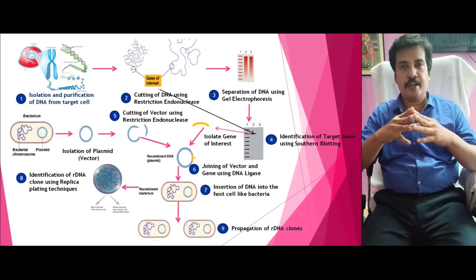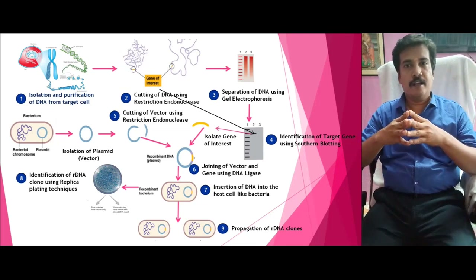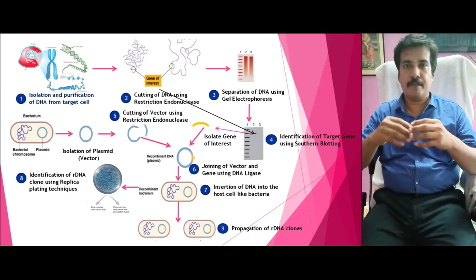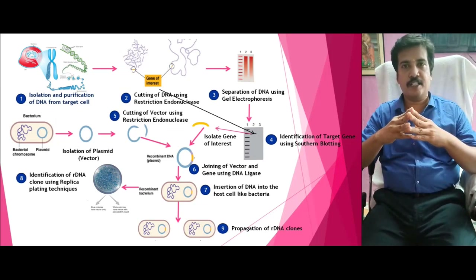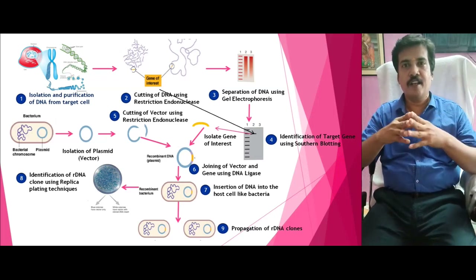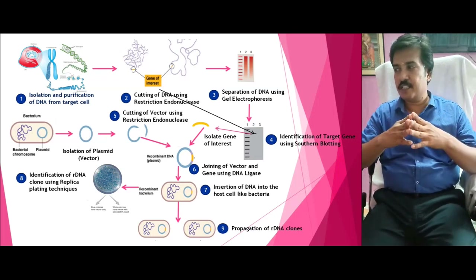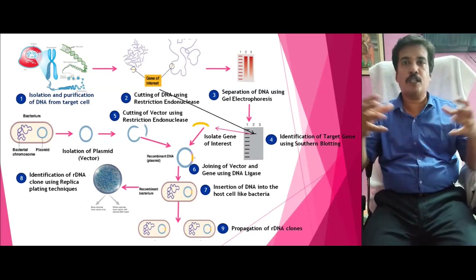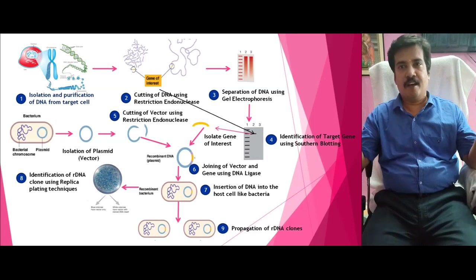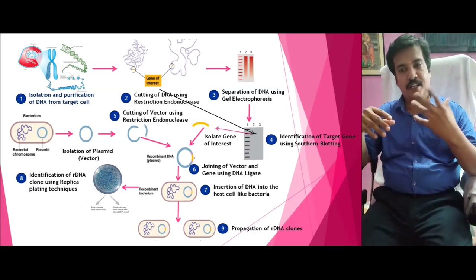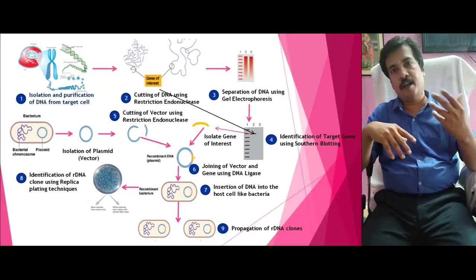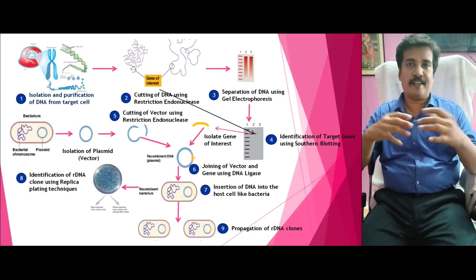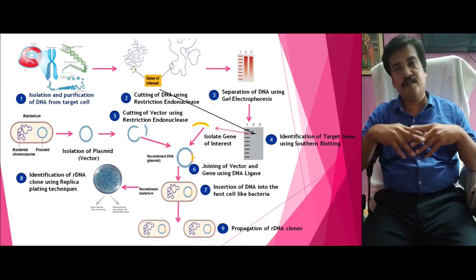After isolation of the rDNA clone, it is cultivated on a large scale for further production. The rDNA vector carrying the gene should propagate to the next generation. This is the final stage — the propagation of the rDNA clone. Once the rDNA clone starts propagating, we can produce large quantities of DNA carrying the foreign gene.